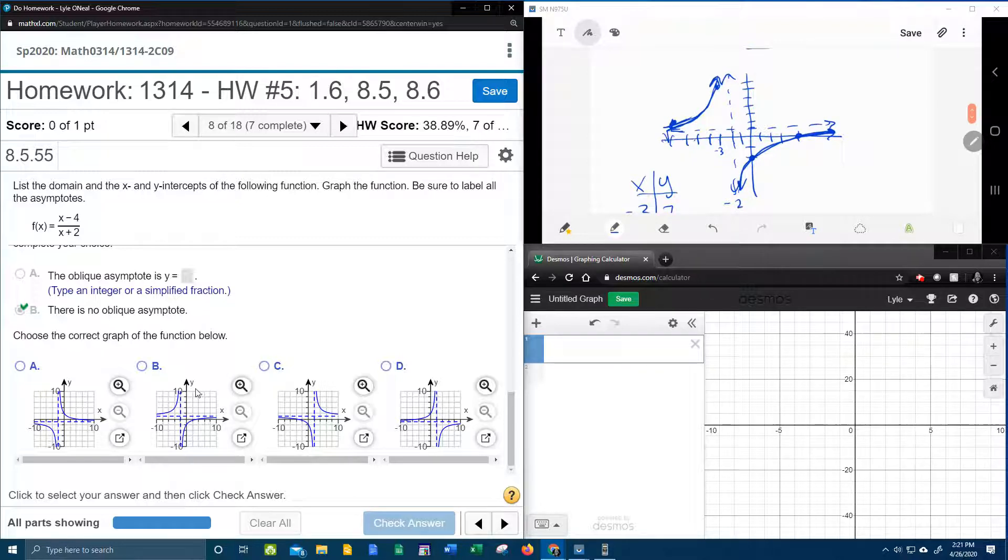Alright, so now let's see if we can pick a graph that looks something like this. Let's see here, vertical. Oh, okay, so it can't be A. Notice the horizontal asymptote is at negative 1, not 1. It could be B. It can't be C because the vertical asymptote is on the wrong side of the y-axis. It can't be D. So by process of elimination, it has to be B.